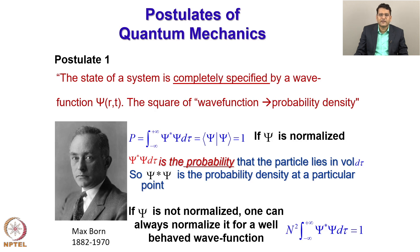Now the first postulate says the state of a system is completely specified by a wave function and the square of the wave function is related to probability density.